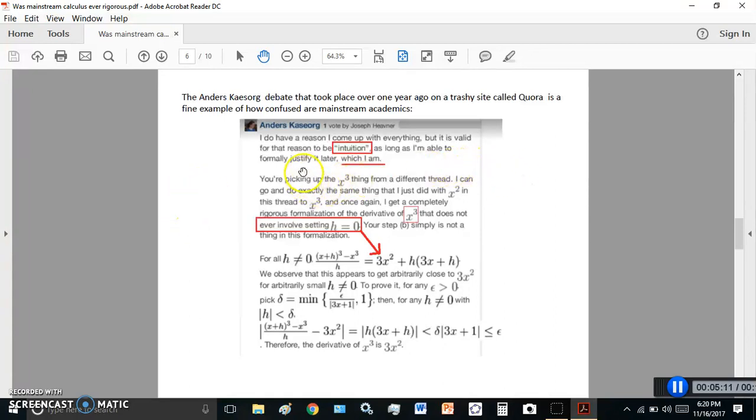And then he says, as long as I'm able to prove it later on, which I am, that's a lie because he never was able to prove it. So, he, and then in the very next paragraph, he says, I get completely rigorous formulation, formalization of the derivative x cubed that does not ever involve setting h to zero. But look, how can you get the derivative 3x squared without setting h equals to zero here?